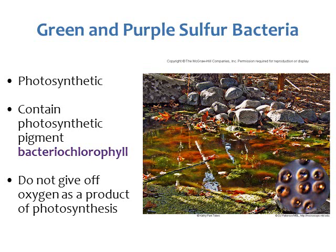The green and purple sulfur bacteria are also photosynthetic and contain a photosynthetic pigment called bacteriochlorophyll. Instead of giving off oxygen as a byproduct — as happens in normal plant photosynthesis — the green and purple sulfur bacteria give off sulfur as a byproduct of photosynthesis, so they have kind of that rotten egg sulfur smell to them.